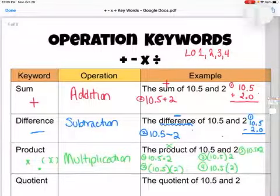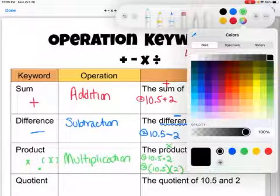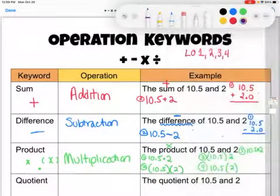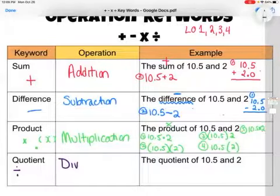The fourth keyword is quotient. If you see quotient, that means to divide. Quotient means division. Here we have the quotient of 10.5 and 2, and there are a few ways you might see this.